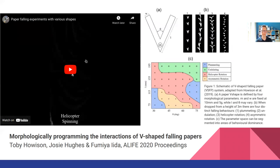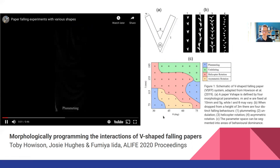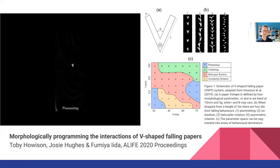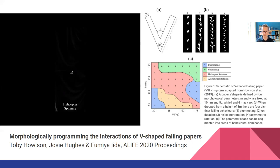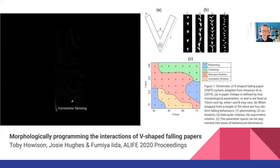I just want to show this nice video — this is work by Toby House, Josie Hughes, and Fumia Ida in Cambridge. They were exploring the space of behaviours of a simple paper aeroplane, which was just a V-shape, and all they did was vary the length and the angle of the V-shape. What they found was that these simple alterations in organisation space produced very different classes of behaviour — actually four different classes, depending upon the exact combination of length and angle. That's a nice demonstration of action arising out of the interaction of an organisation with the rules of physics.